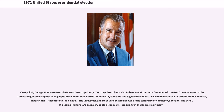On April 25, George McGovern won the Massachusetts primary. Two days later, journalist Robert Novak quoted a Democratic senator — later revealed to be Thomas Eagleton — as saying the people don't know McGovern is for amnesty, abortion, and legalization of pot, adding that once Catholic Middle America finds this out, "he's dead." The label stuck and McGovern became known as the candidate of amnesty, abortion, and acid. It became Humphrey's battle cry to stop McGovern, especially in the Nebraska primary.